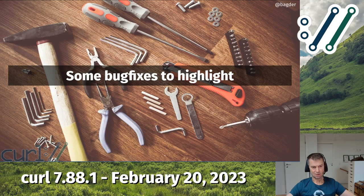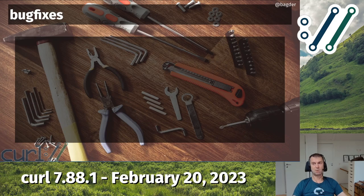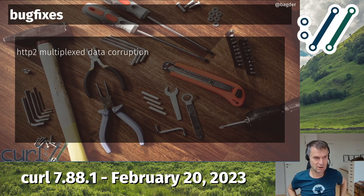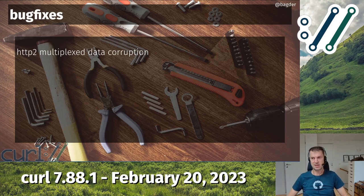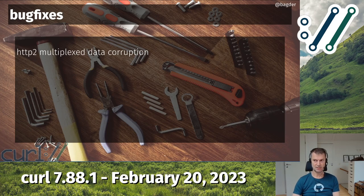Some of those 25 bug fixes include documentation fixes and other minor things not really worthy to discuss here — you can read the changelog if you want. But maybe the six most important bugs are: the one that actually triggered me to do this release at all is the HTTP/2 multiplex data corruption. It turns out this wasn't actually a new bug because it existed already before, but due to an optimization we did for the last release, this bug became more easy to trigger.